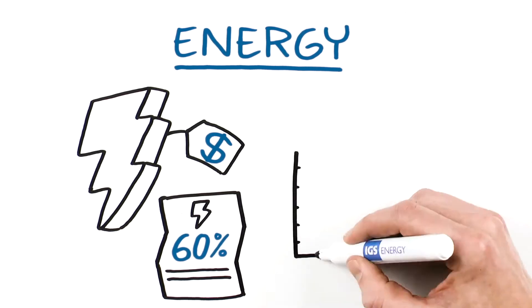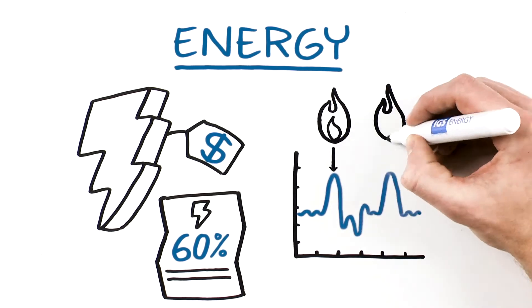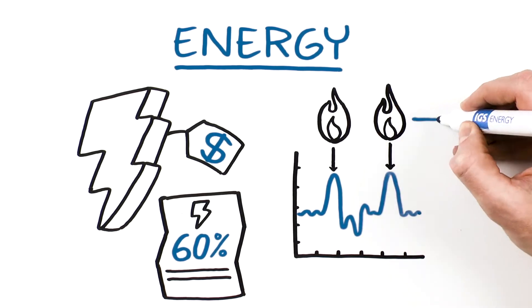Prices are subject to dramatic fluctuation throughout the day, often in response to natural gas prices. Natural gas is widely used to generate electricity, so these spikes are closely correlated.